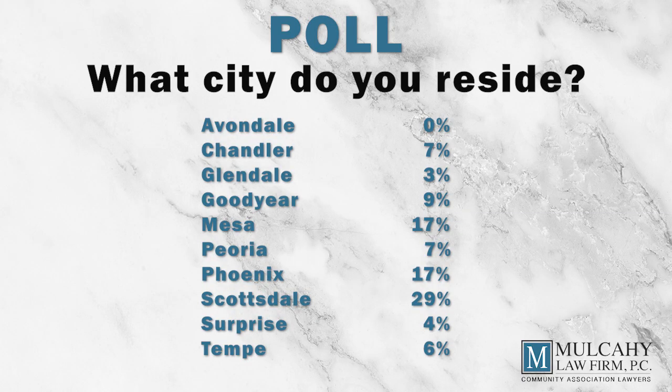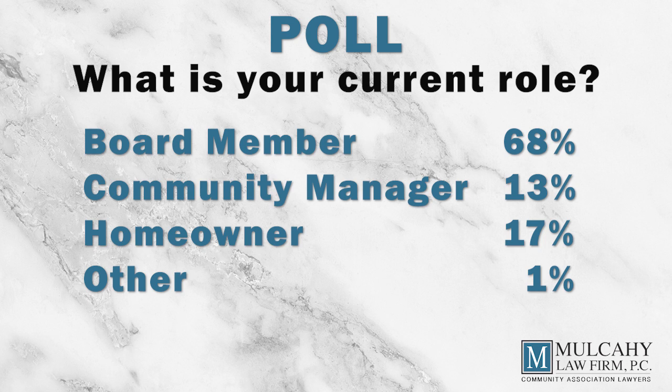Let's look at our poll results. We have great representation from almost all the cities we work with. Chandler has 7%, Glendale 3%, Goodyear 9%, Mesa 17%, Peoria 7%, Phoenix 17%, Scottsdale 29%, Surprise 4%, and Tempe 6%. In terms of demographics, 68% of you are board members, 13% are managers, 13% are interested homeowners, and 1% are other. We have over 113 participants here today.